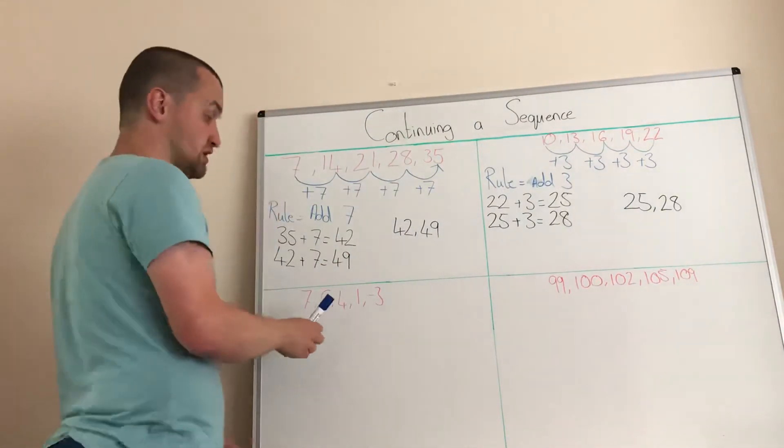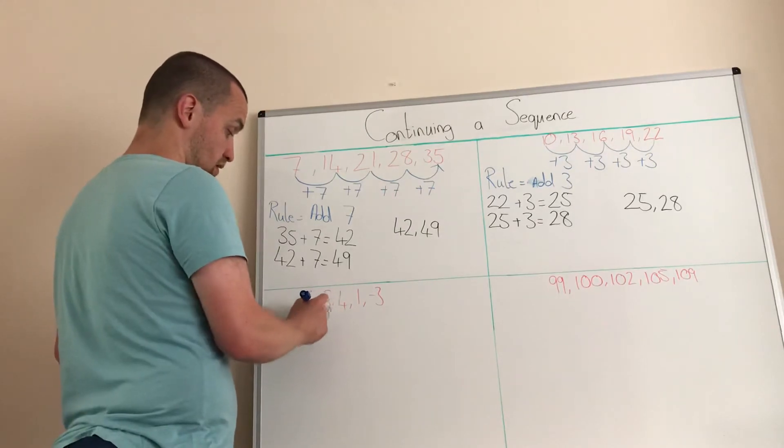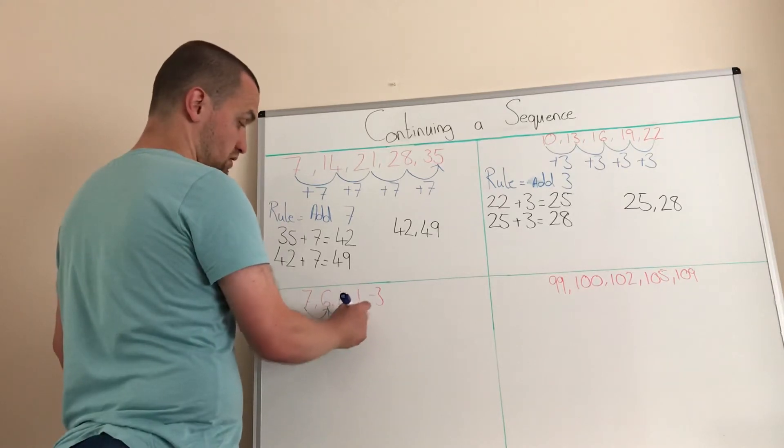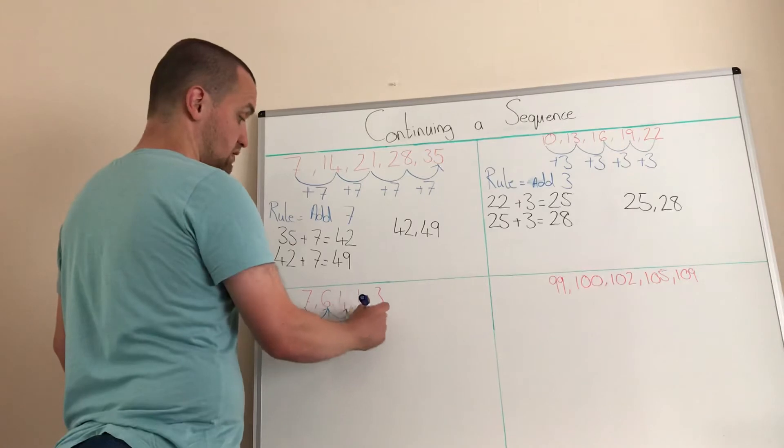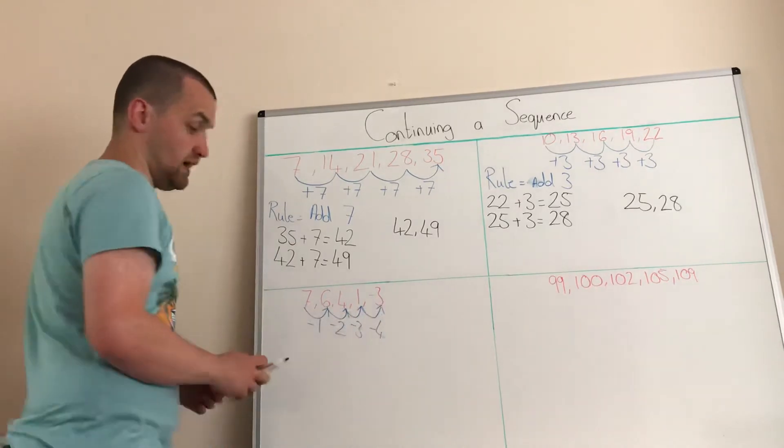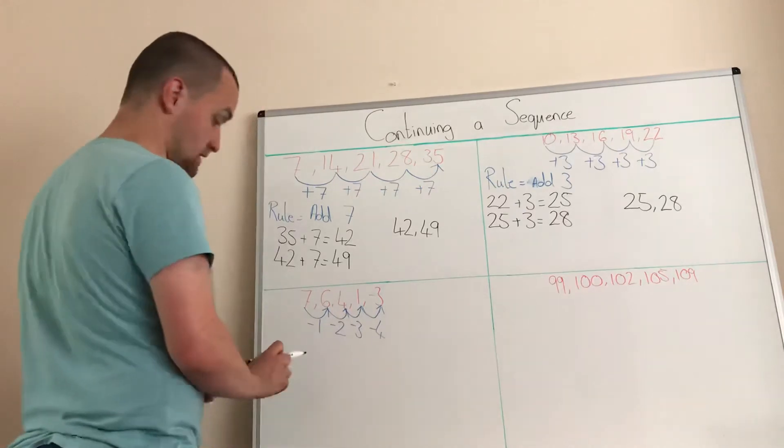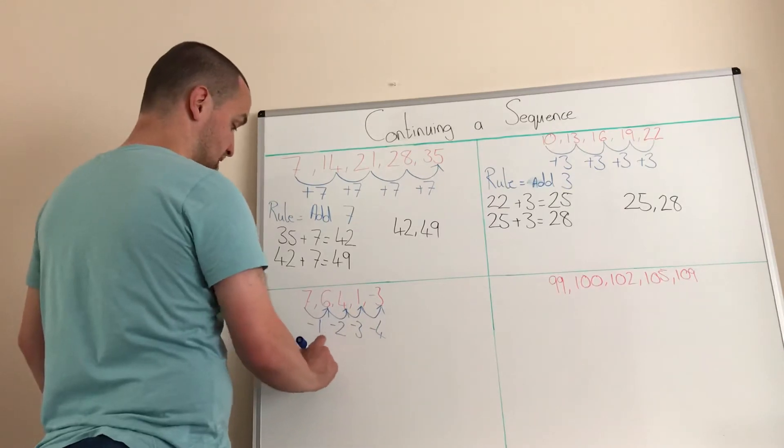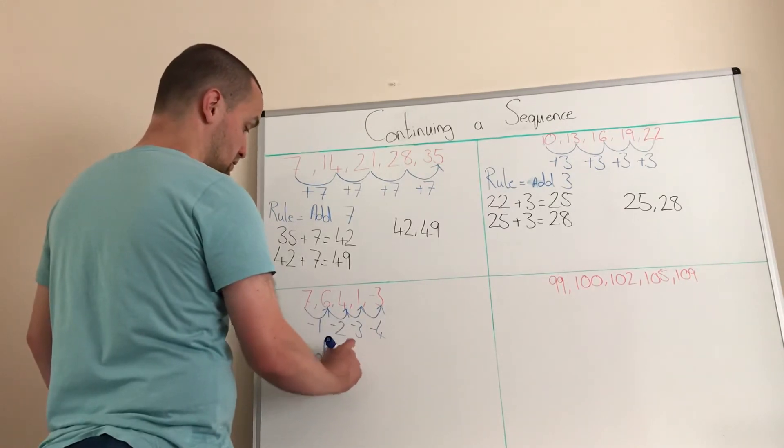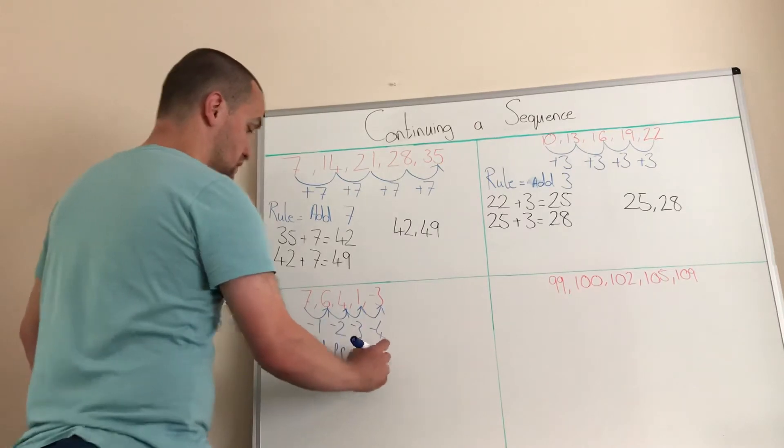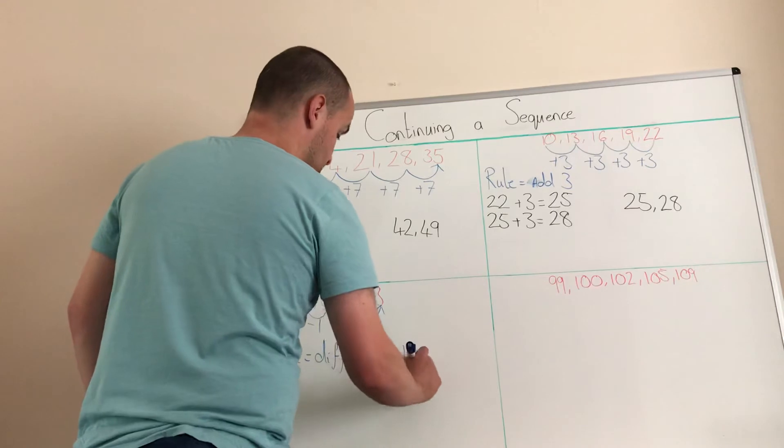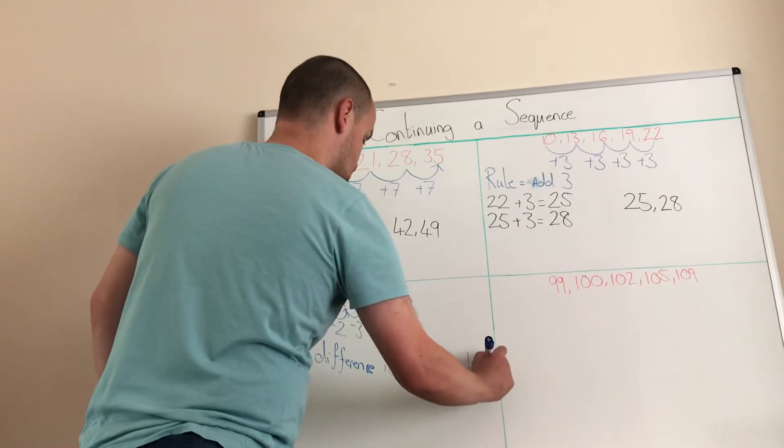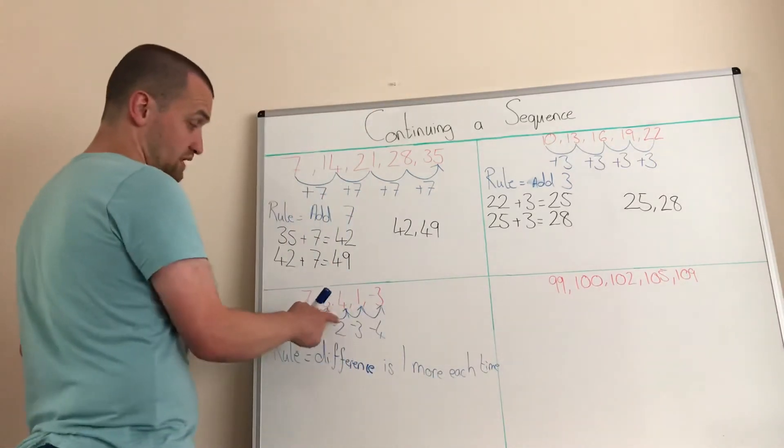Right, we're going to mix it up a bit now. So sequence three. We're going to take one, take two, take three, take four. Now the numbers aren't all the same. However, there is a pattern and the pattern, the rule that we need, is that the difference is one more each time. So minus one, minus two, minus three, minus four.